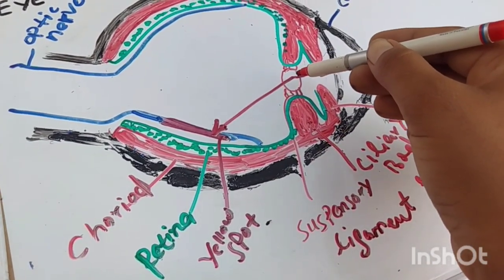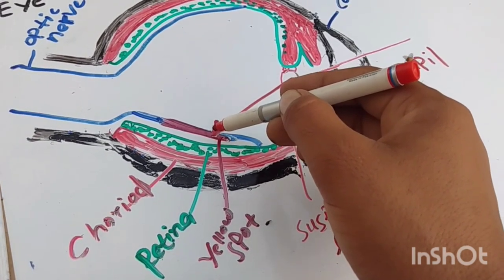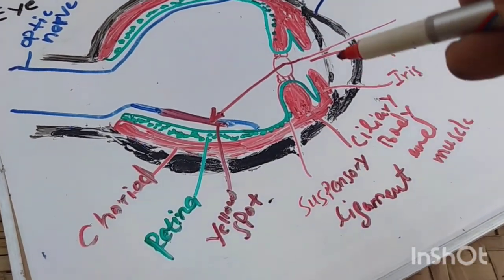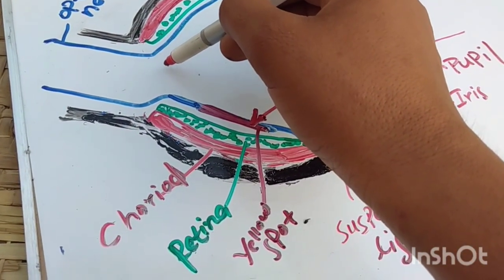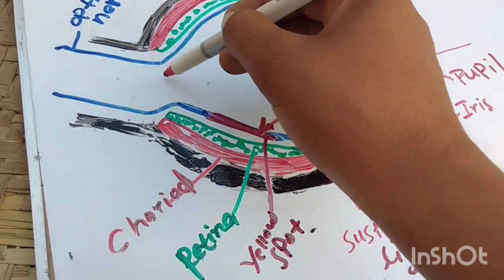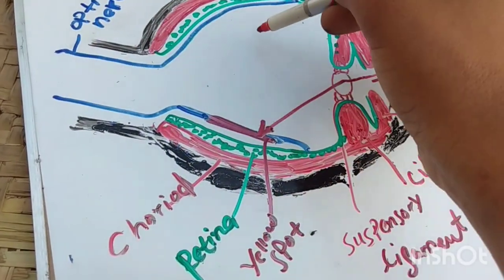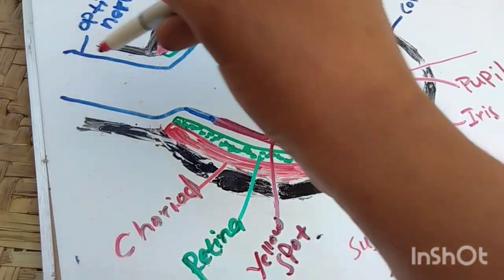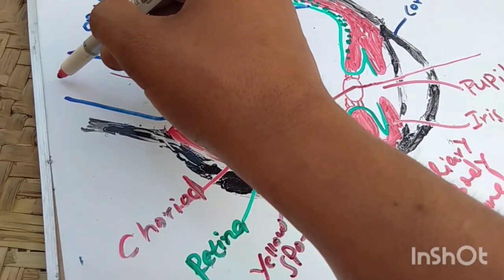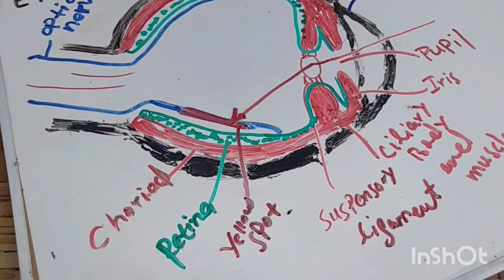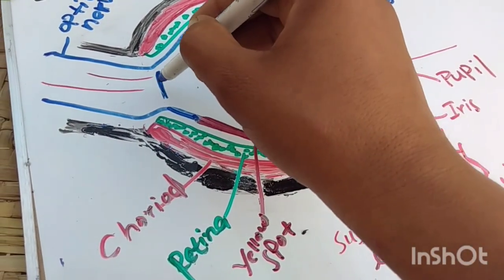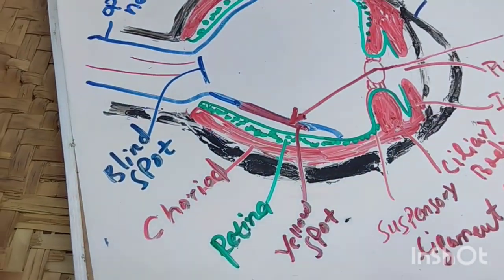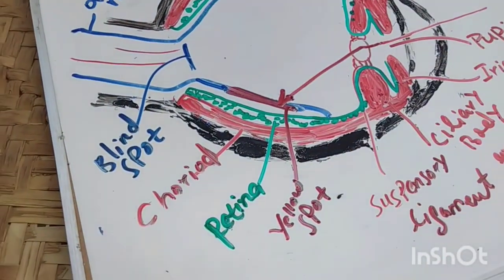Light also refracts through the lens to the yellow spot. The yellow spot is the part of the eye where high concentrations of rod and cone cells are present. Another part of the eye where nothing special is present — only arteries coming in and veins coming out — is called the blind spot.